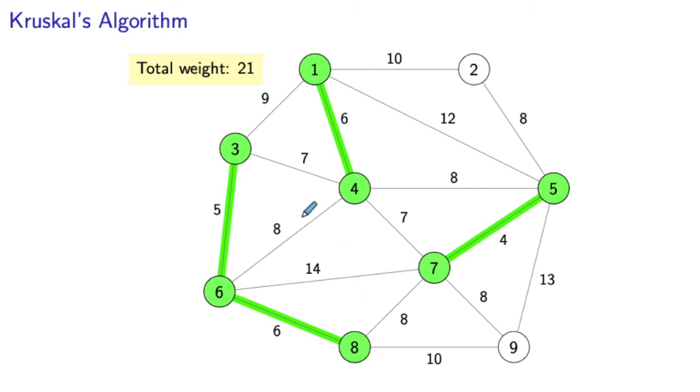Next, we have a couple of edges of weight seven, so we insert one of them first. This will be the edge three-four. Now you see that we marked a couple of edges in red. These are the edges that cannot be added to our spanning tree because they would create a cycle.